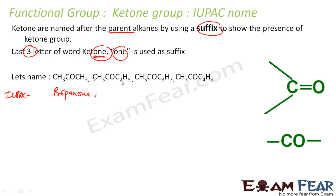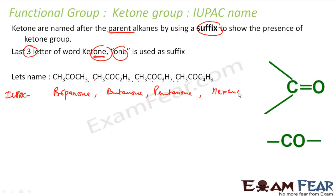The next one has 1 + 2 + 1 = 4 carbons — 4 is butane, so it becomes butanone. The next has 1 + 2 + 2 = 5 carbons — 5 is pent, so it is pentanone. And the next has 1 + 2 + 3 = 6 carbons — 6 is hexane, so it is hexanone. This is how you name ketones using the IUPAC name.